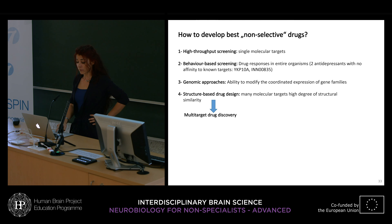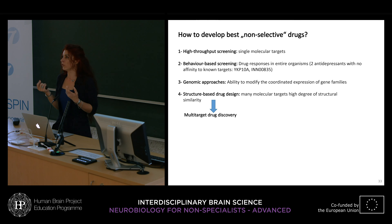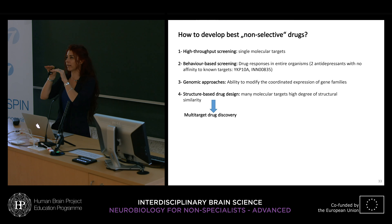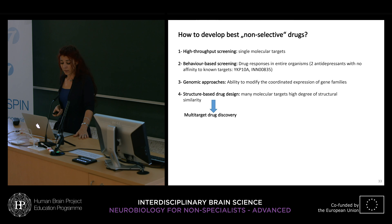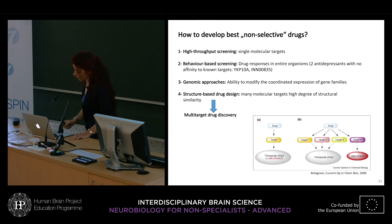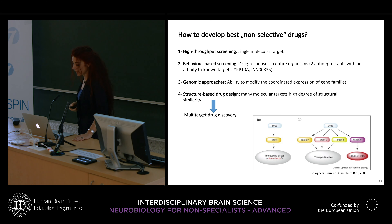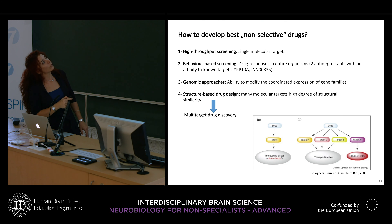One can follow genomic approaches — the ability to modify the coordinated expression of gene families. One gives known effective drugs to animals and performs a microarray to see which proteins are affected, then designs drugs targeting those proteins directly while minimizing secondary effects. One can also do structure-based drug design using different molecular targets with a high degree of similarity. This approach is called multi-target drug discovery — one drug able to affect several targets to reach the therapeutic effect — in contrast to single-target discovery. The caveat is that it may also have more side effects than classical single-target drugs.